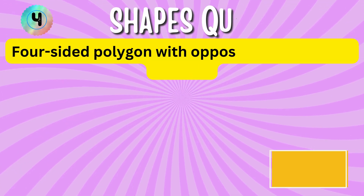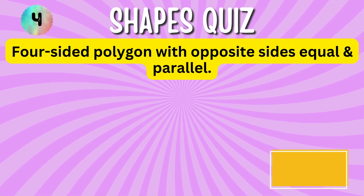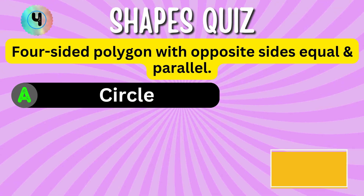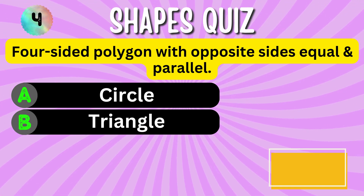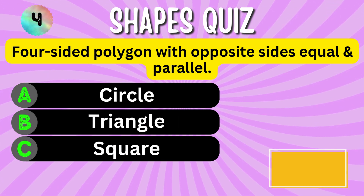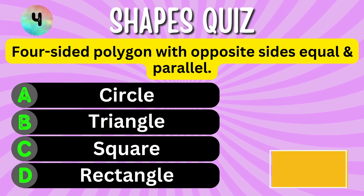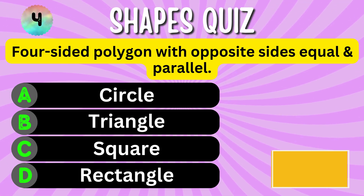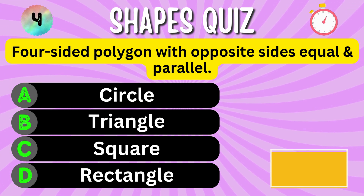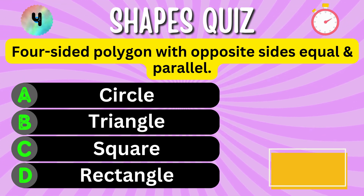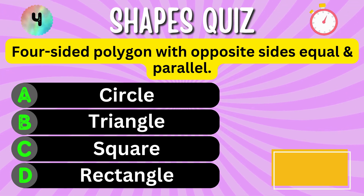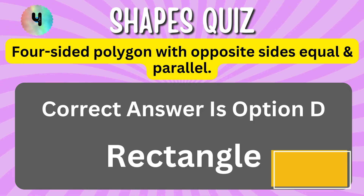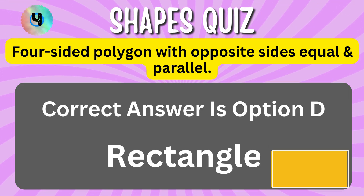A four-sided polygon with opposite sides equal and parallel. Option A. Option B. Option C. Option D. You have 5 seconds to choose the correct answer. Your time starts now. The correct answer is Option D, Rectangle.